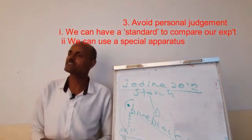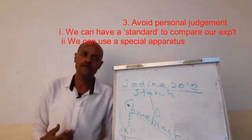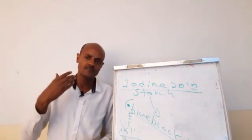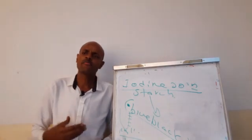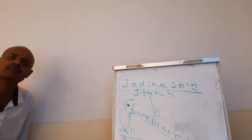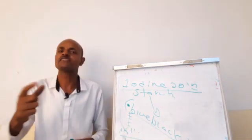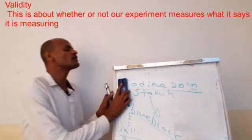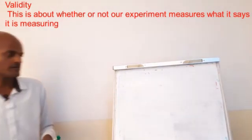The next term of the scientific experiment is validity. Validity refers to whether or not our experiment measures what it is supposed to be measuring. In terms of the scientific experiment, we can look at different properties.